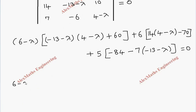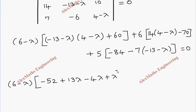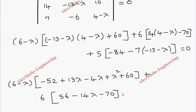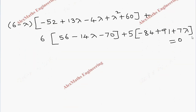In the next step we write 6 minus lambda as it is, then minus 13 into 4 gives minus 52, then plus 13 lambda minus 4 lambda plus lambda squared plus 60, then plus 6 into 14 into 4 which is 56, minus 14 lambda plus 7 lambda minus 70, then plus 5 into this bracket giving minus 84 plus 91 plus 7 lambda, equal to zero.